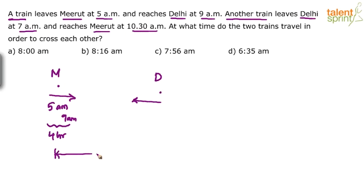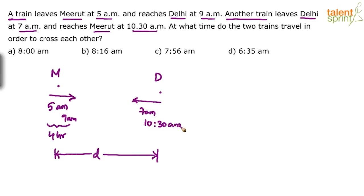The total distance is D. The other train left Delhi to reach Mirit — it started at 7 am and reached Mirit at 10:30 am, so it takes 3.5 hours. While the first train took 4 hours (5 am to 9 am), this one takes 3.5 hours.